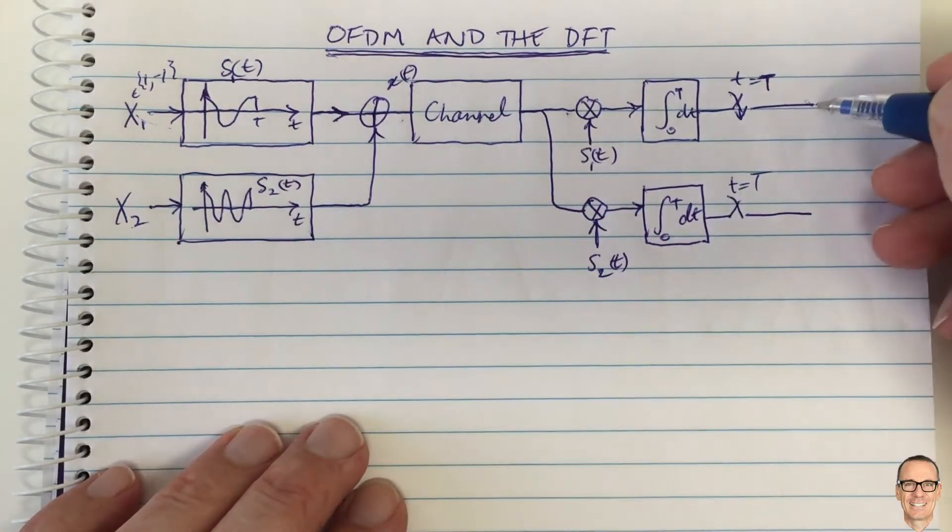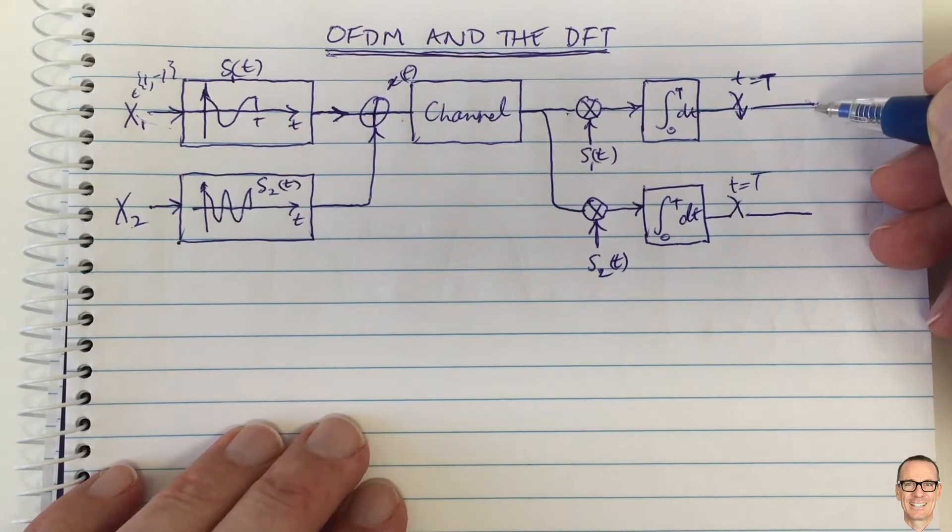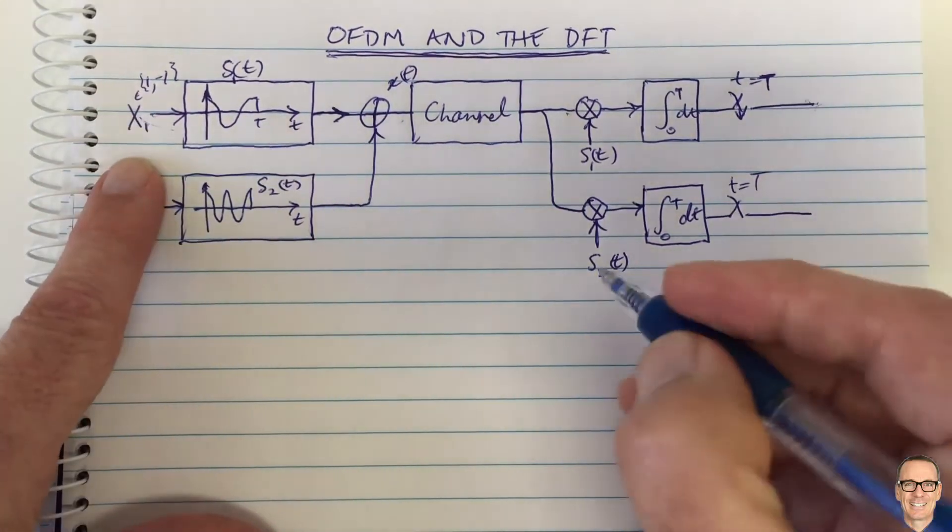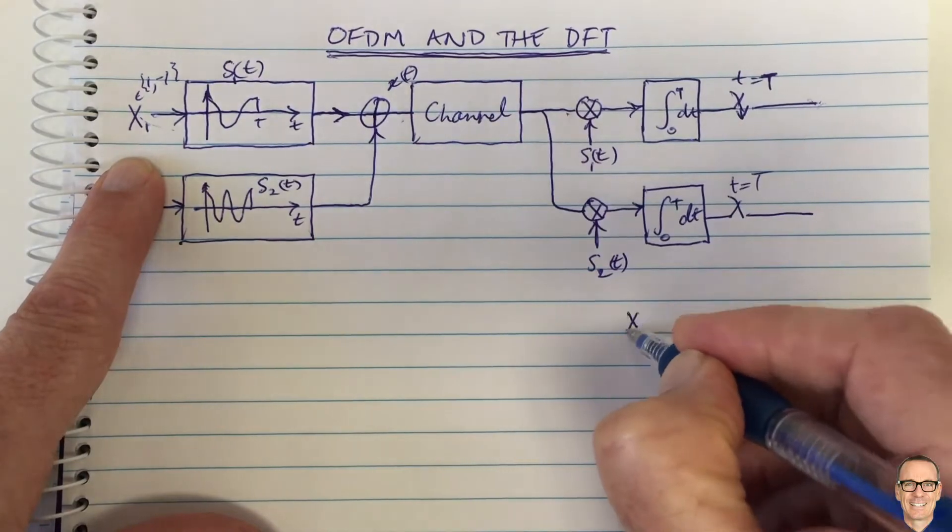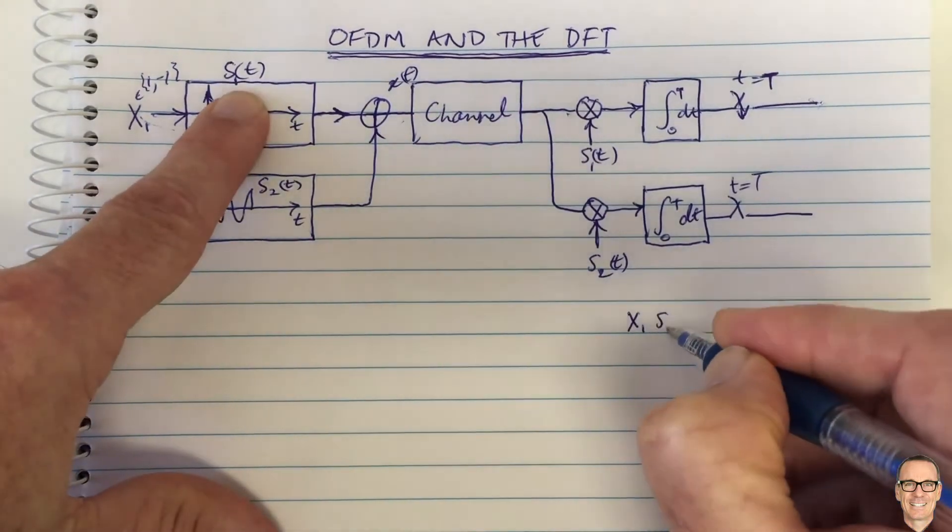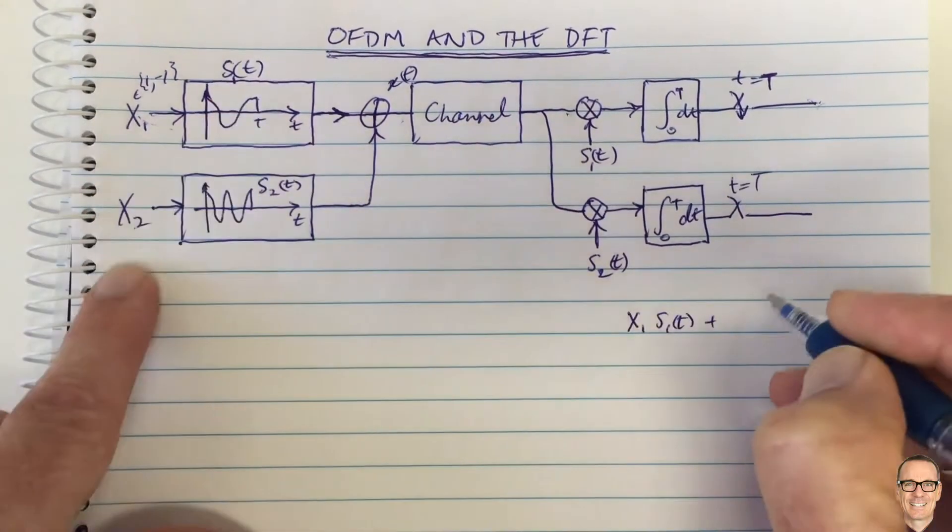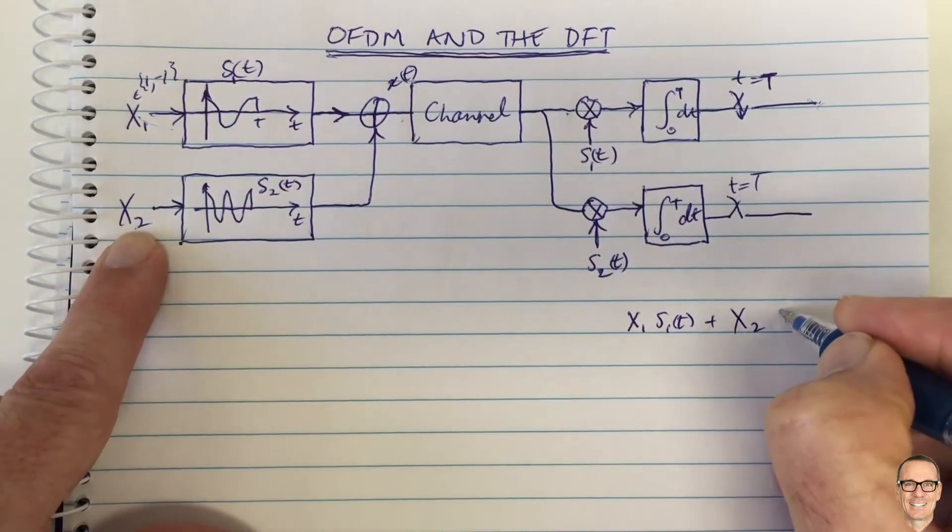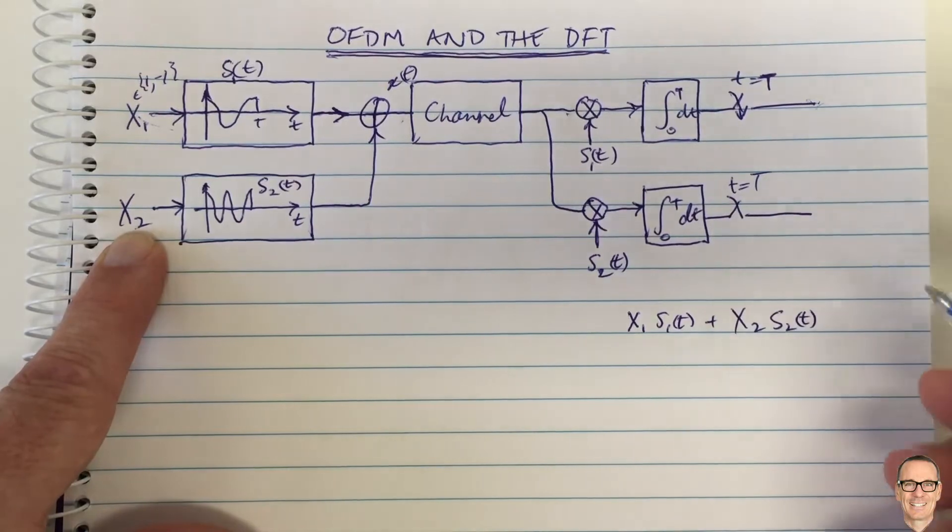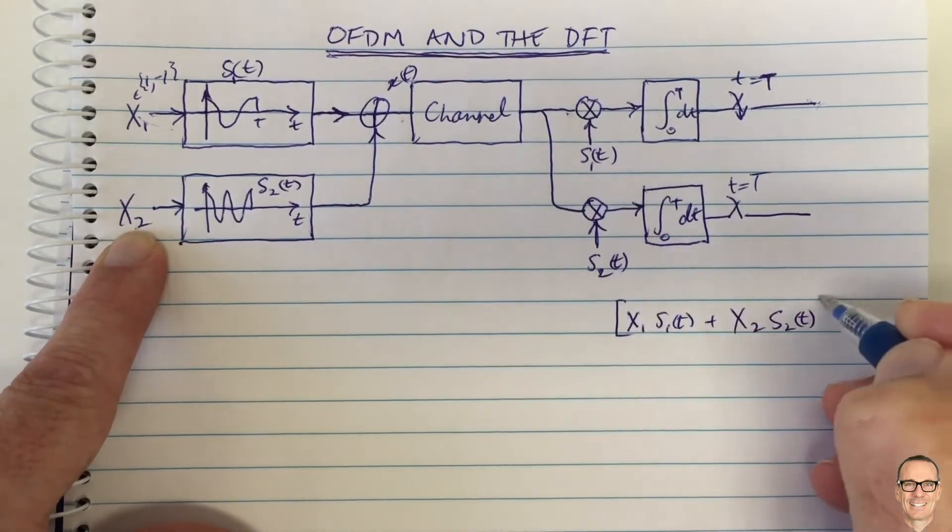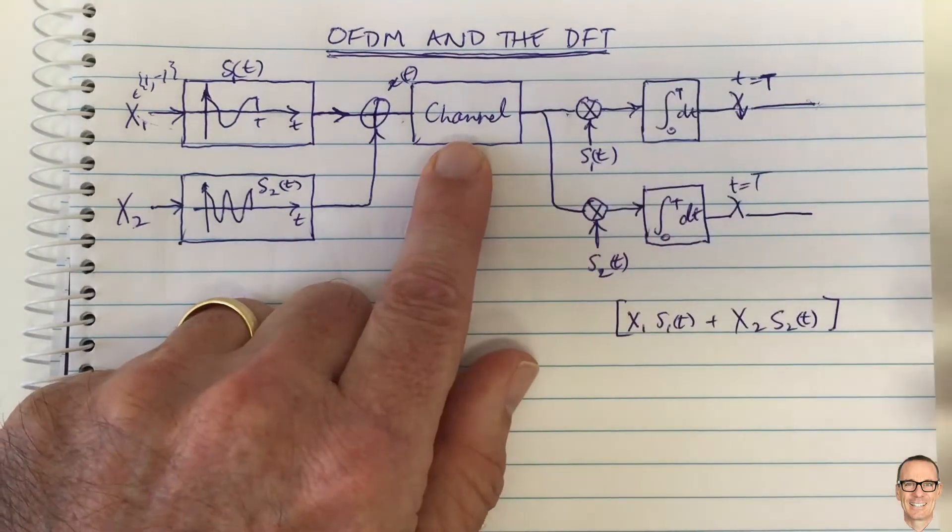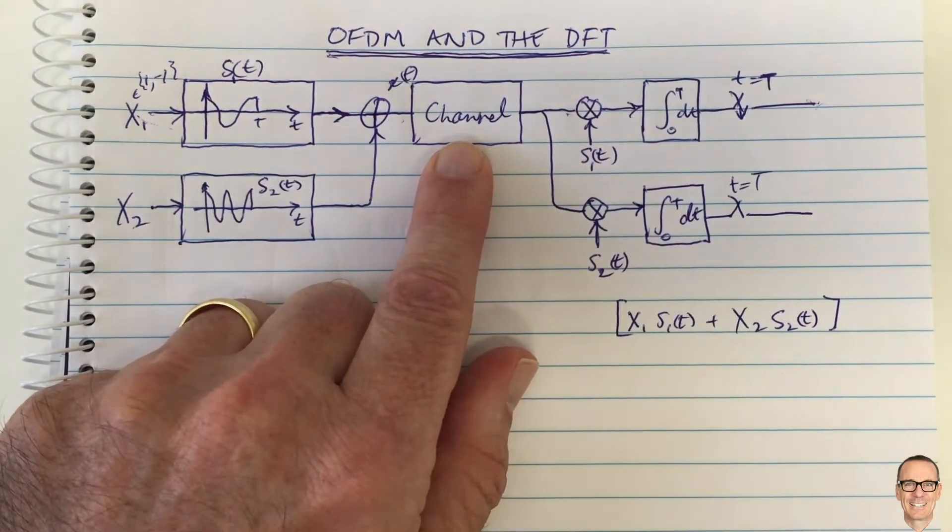Over here, what's going to be coming? Well, the input signal is x1 times s1(t) plus x2, that's the digital data for the second data stream, times s2(t). That's the transmitted signal. Let's assume for this math that the channel just has unit gain and there's no noise.